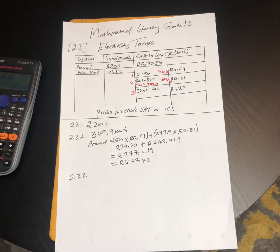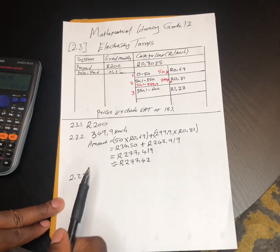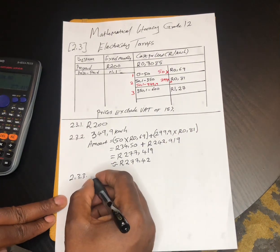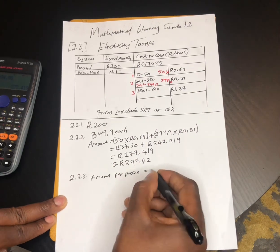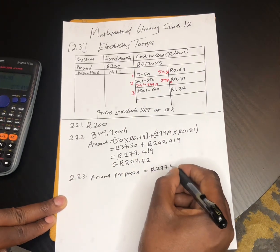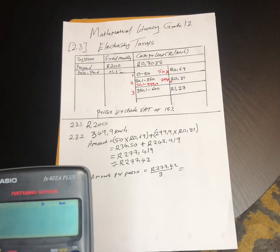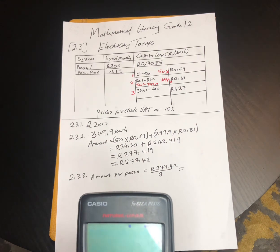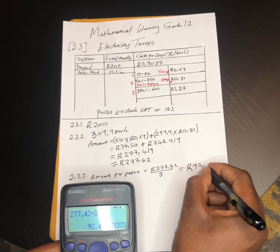To verify, we check how much one person was costing in terms of electricity usage. Amount per person = 277.42 ÷ 3. According to her claim, one person was paying R92.47.